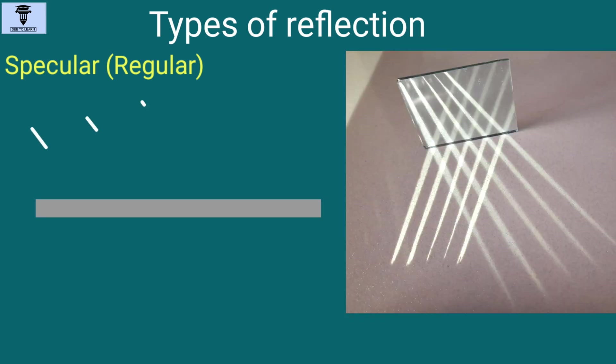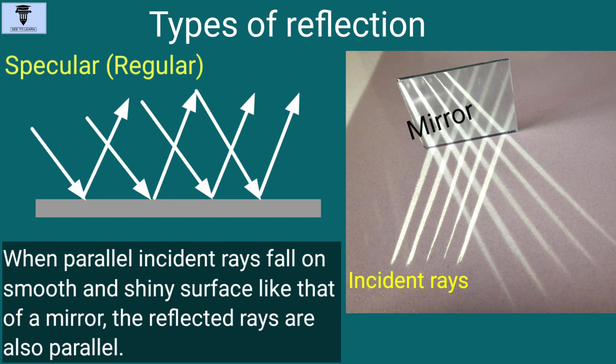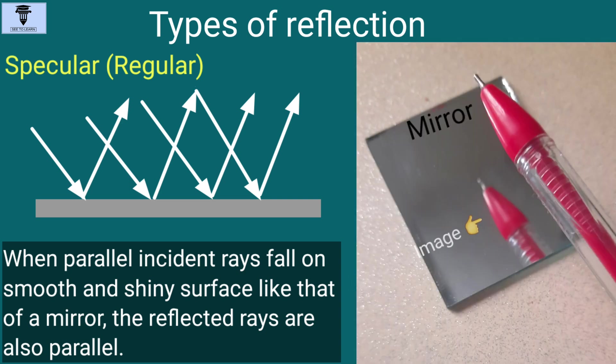When parallel incident rays fall on a smooth and shiny surface, like that of a mirror, the reflected rays are also parallel. This is called regular reflection of light or specular reflection of light. An image is formed due to specular reflection of light.